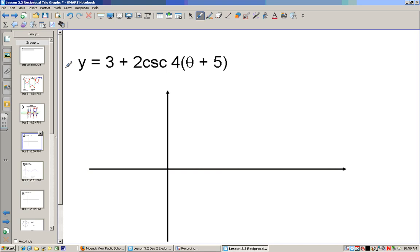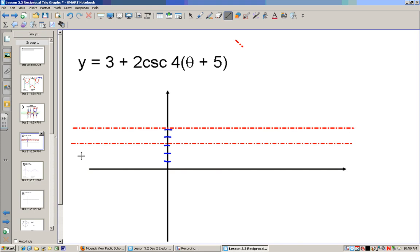Now try this one on your own. 3 plus 2, cosecant to 4, theta plus 5. If we go up 3, 2 up, 2 down, we're going 5 to the left.